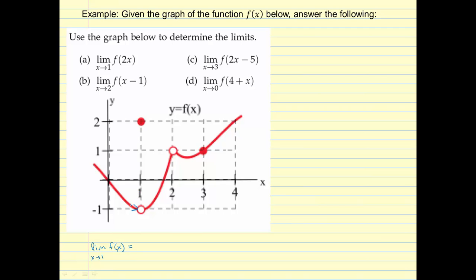Along the left-hand side, I see that the y values approach negative one. So we have the limit as x approaches one from the left-hand side of f of x. That equals negative one, the y value. And then as I approach from the right-hand side, I get the same value. The limit as x approaches one from the right-hand side of f of x, that's also negative one.